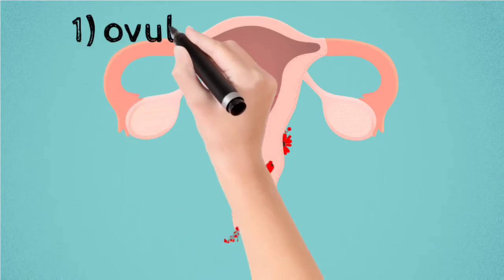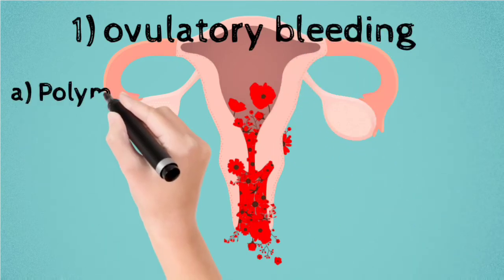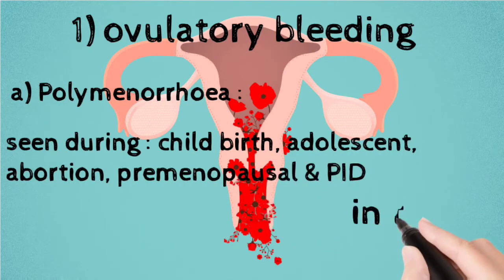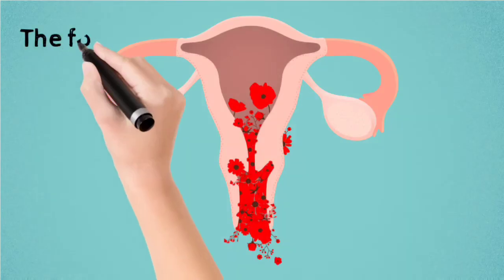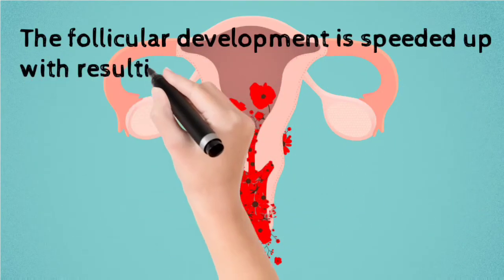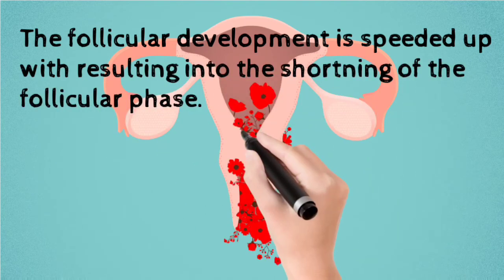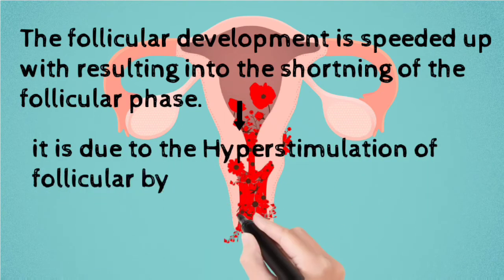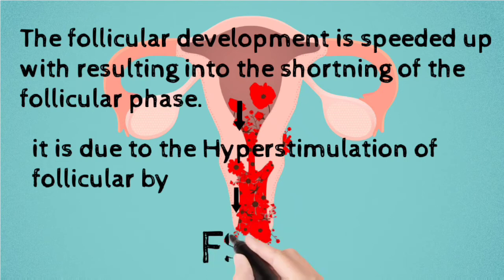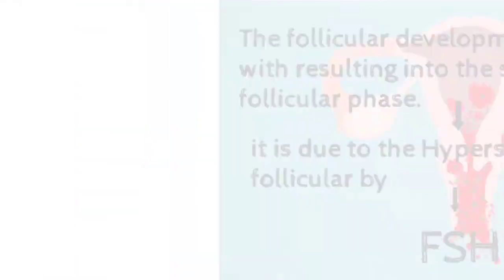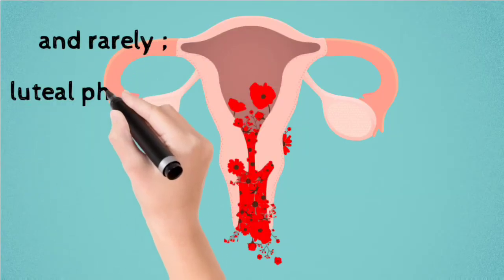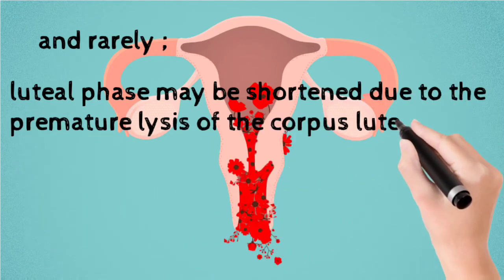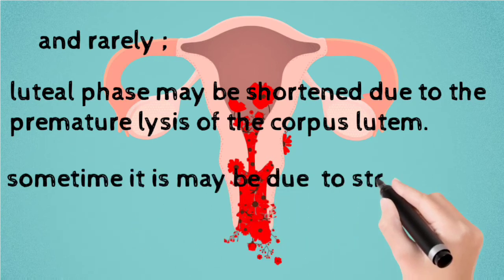In ovulatory bleeding, the first condition is polymenorrhea. It is seen during childbirth, adolescence, abortion, the premenopausal period, and PID. In this condition, follicular development is speeded up, resulting in shortening of the follicular phase. This is due to hyperstimulation of the follicle by follicle-stimulating hormone. Rarely, the luteal phase may also be shortened due to premature lysis of the corpus luteum, and sometimes due to stress-induced stimulation.